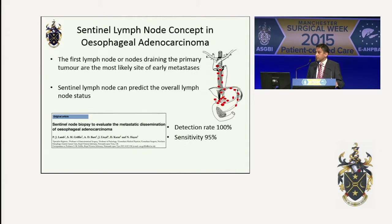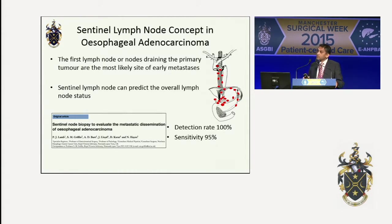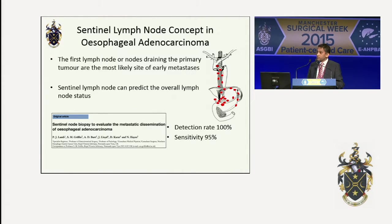Esophageal adenocarcinoma spreads to both abdominal and mediastinal lymph node fields. The central lymph node concept is that the first lymph node or nodes that drain the cancer are the most likely sites of early metastases. Whether these central nodes contain metastatic disease will predict the overall status of the entire lymphatic field. We've previously presented work here in the context of open surgery, and in esophageal adenocarcinoma, this concept works.